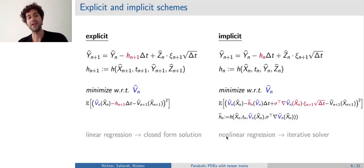The right-hand side looks a little bit more complicated. And the essential difference is that the left-hand side, of course, depending on an appropriate ansatz function class, can often be seen as a linear regression, which usually can be solved in closed form. The implicit scheme, on the other hand, corresponds to a nonlinear regression, for which you need iterative solvers.